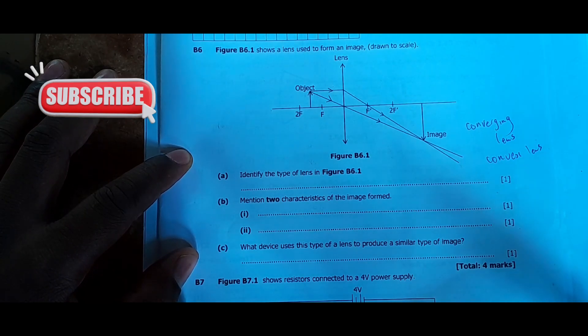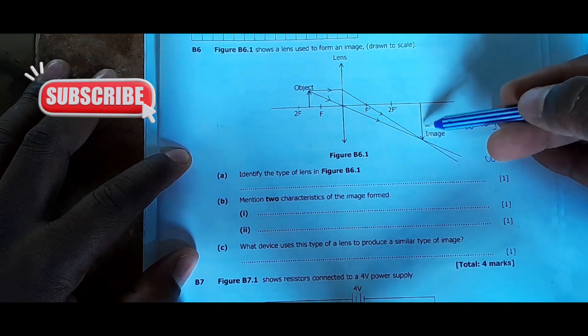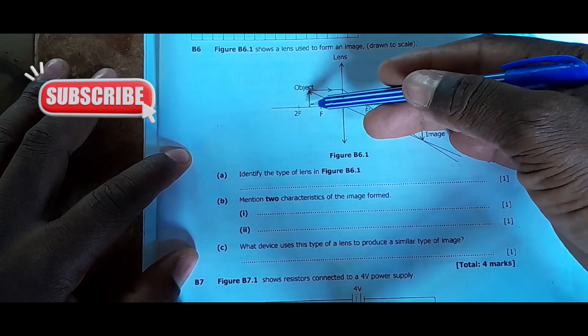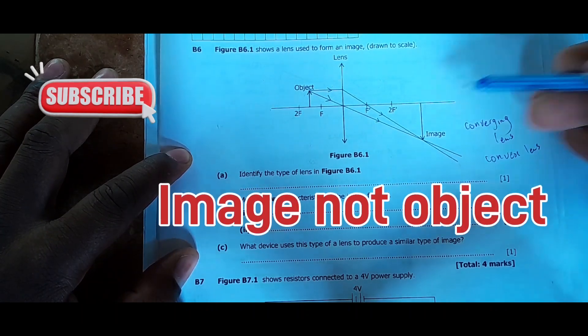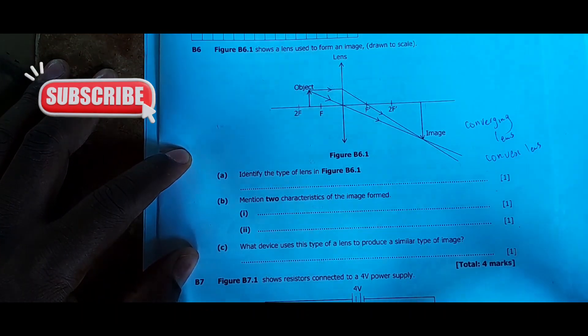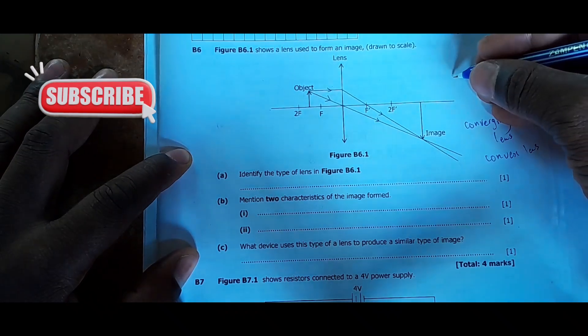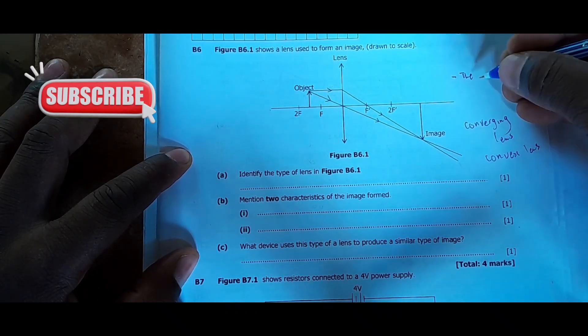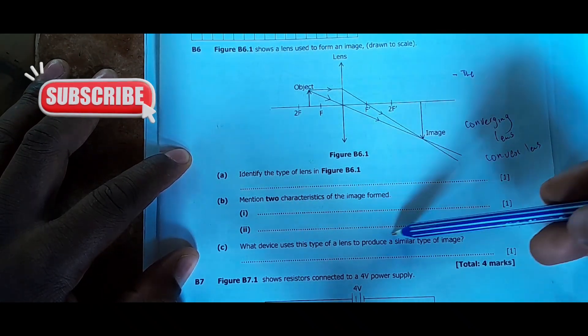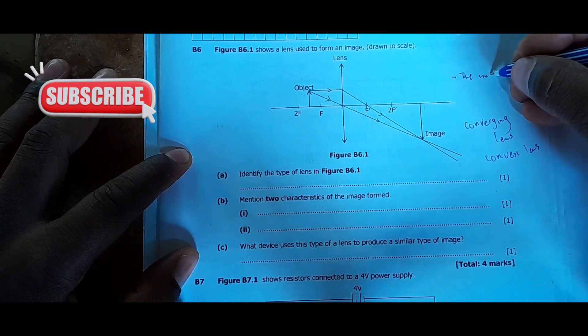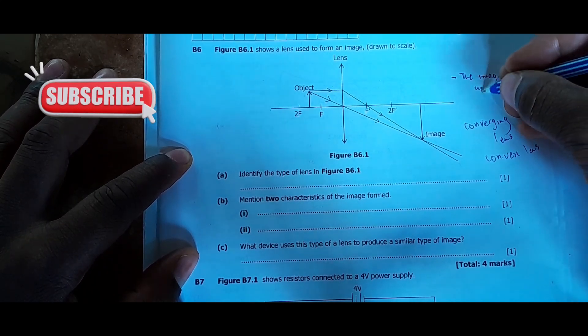And mention two characteristics of the image formed. These are things you don't need to master, you just have to look at the image that is formed. When you look at this one here, it's actually upside down. This one is upright which is the object, so the image is upside down.